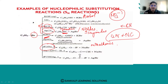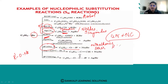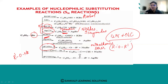When ethyl bromide is treated with sodium alkoxide, the class of product obtained is ethers — because you get the R–O–R′ linkage. When you have an oxygen linkage between two carbon groups it is called an ether. So the class of products obtained is ethers.